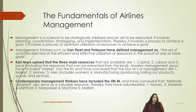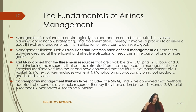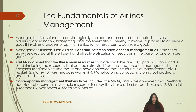Van Fleet and Peterson said that management is a set of activities directed at efficient and effective utilization of resources in the pursuit of one or more goals. So the question is: what are these resources? Karl Marx opined that the three main resources available in an industry are capital — money — labor — manpower — and land, which includes the resources that can be extracted from the land.